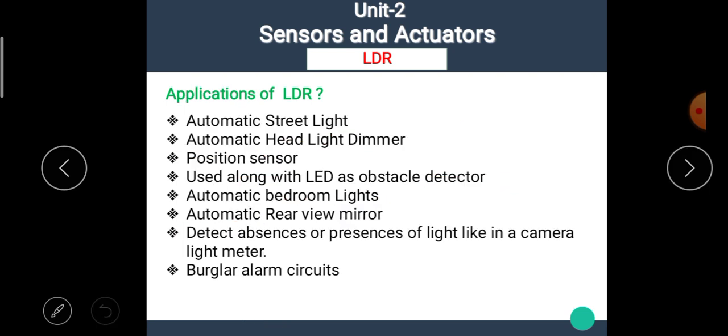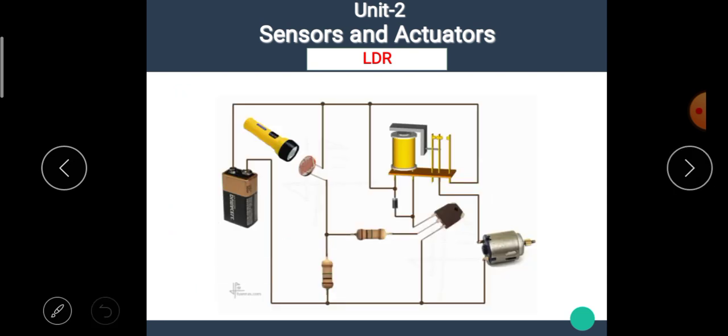Now, let's see the applications of LDR. There are many applications of LDR depending upon the system where we want to measure or we want to operate on the light intensity. Some of them are the automatic street light. LDR used in the automatic head light dimmer. In position sensor, it is used along with LED as obstacle detector. It is used in automatic bedroom lights, automatic rear view mirror. Similarly, it is used to detect absence or presence of light like in camera light meter. It is used in burglar alarm systems, etc.